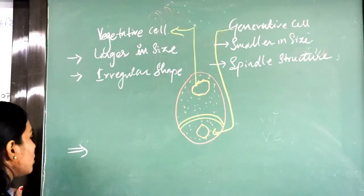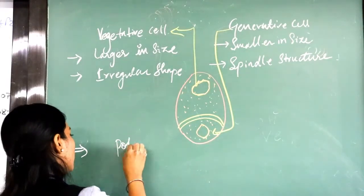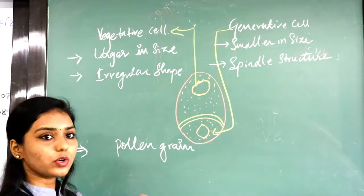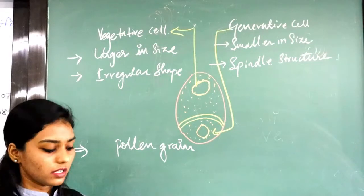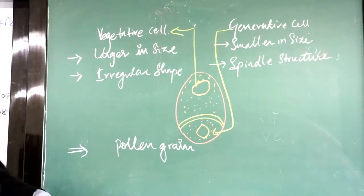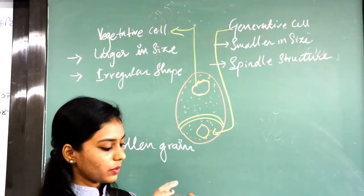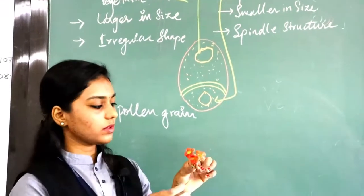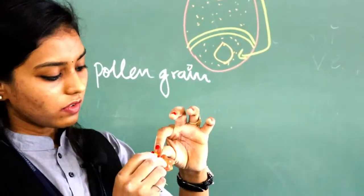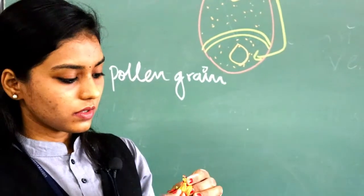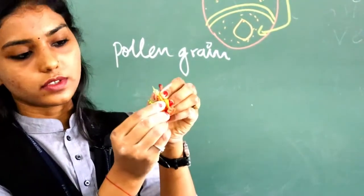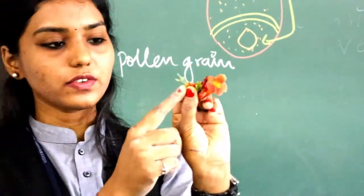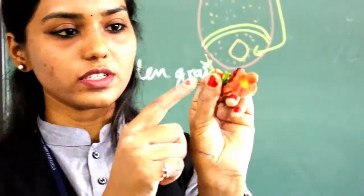Regarding the structure of pollen grains — when we see experimentally, if you want to observe the structure of pollen grain, you might have observed in a flower. I would like to show you a flower from the garden. Here you can see this is the male part of a flower. I hope it is visible to all.